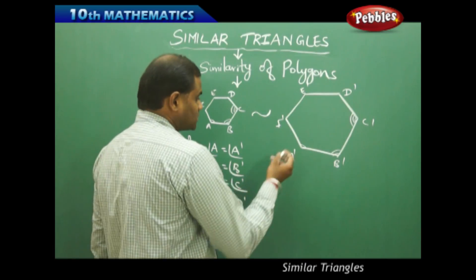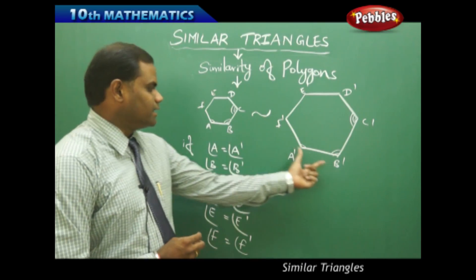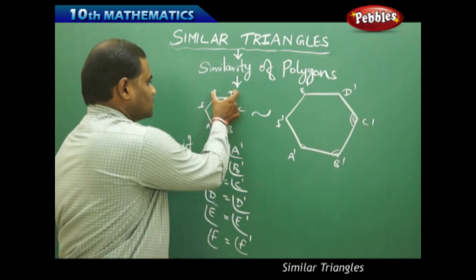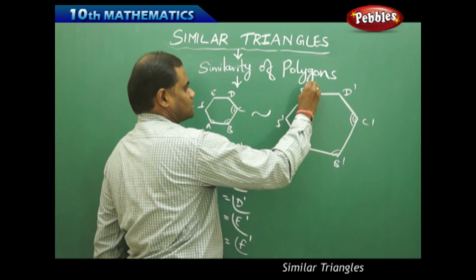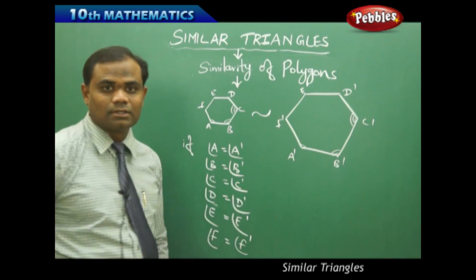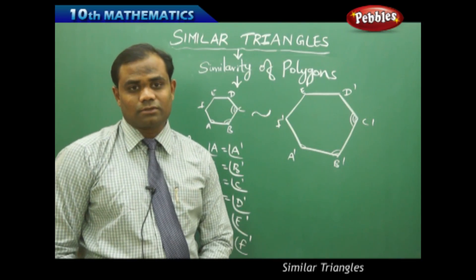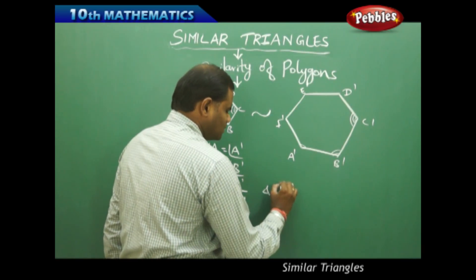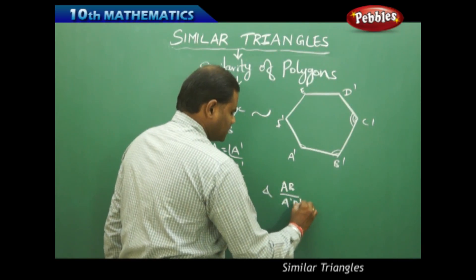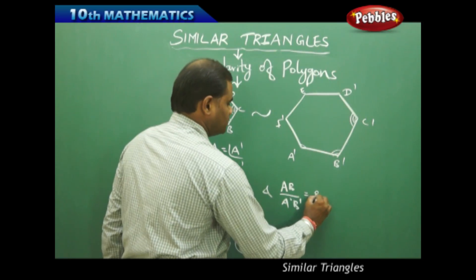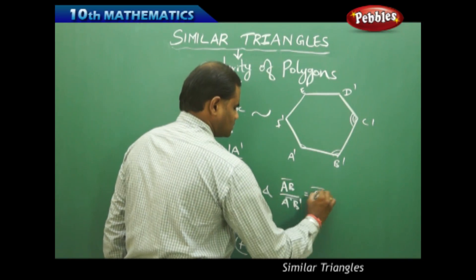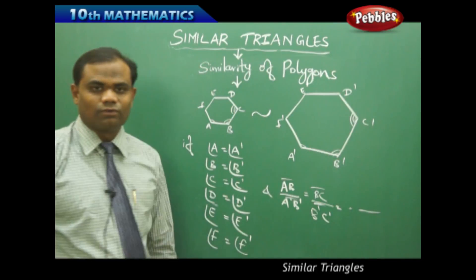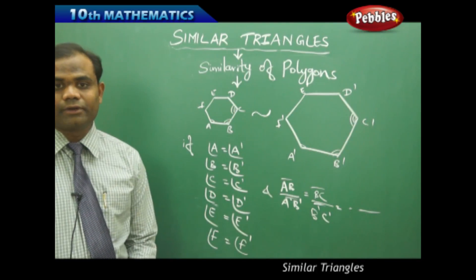Same way, if I take the corresponding sides, then AB by A dash B dash will be equal to BC by B dash C dash, and this by this, this by this, this by this, and this by this. So there will be totally six ratios which I obtain in this case — AB by A dash B dash, then BC by B dash C dash, and so on and so forth. Six ratios in total.